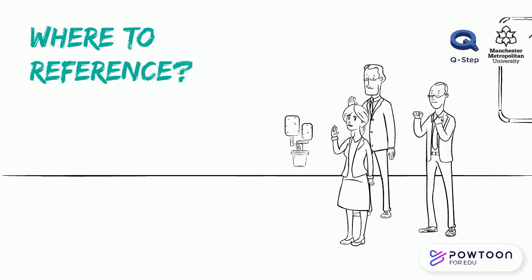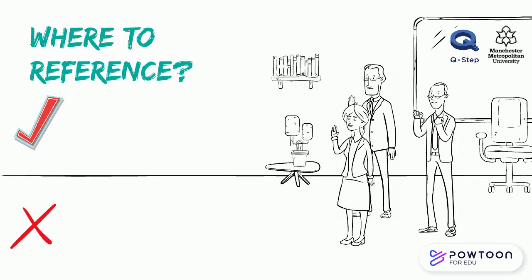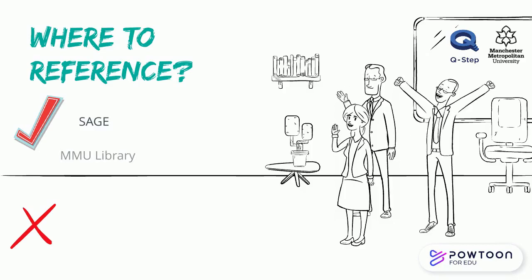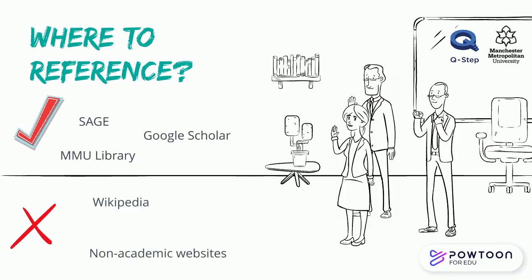In addition, you may be wondering where you should get your references from, so I will list a few to guide you. It's important to reference and cite academic references such as SAGE, the MMU Library, and Google Scholar, in comparison to non-academic references such as Wikipedia, online news sites, and magazines, as your research will lack credibility and academic status.